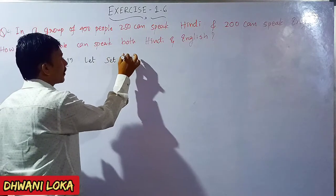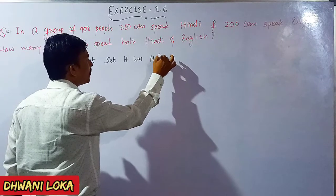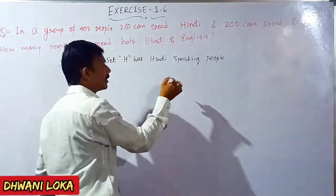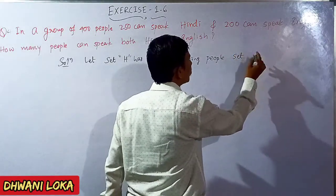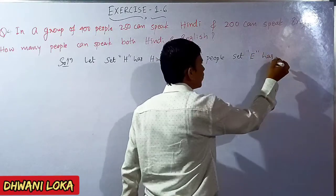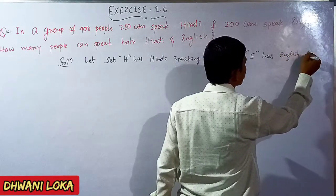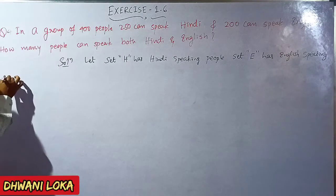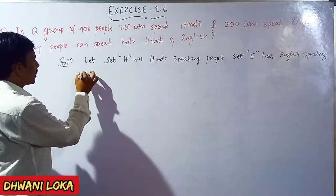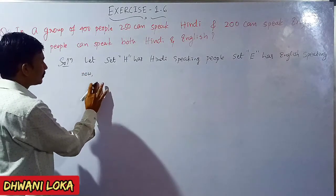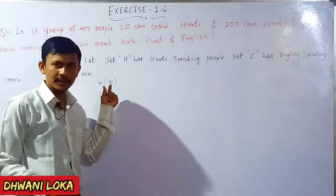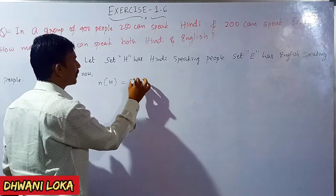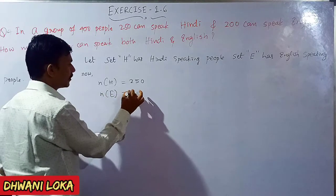Let set H represent Hindi speaking people, and set E represent English speaking people. N of H is the number of Hindi speaking people, which equals 250. N of E is the number of English speaking people, which equals 200.